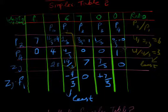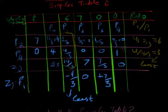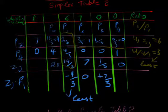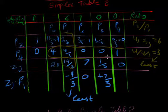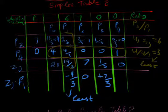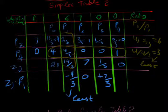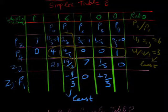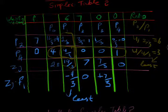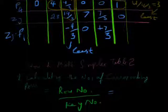So this will be the selected row. Where selected column cuts selected row, it will be the key number. 4 divide 3 is our key number.